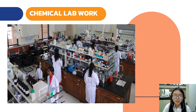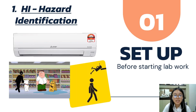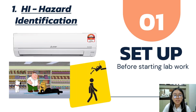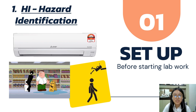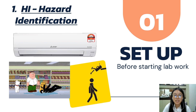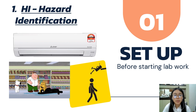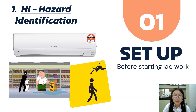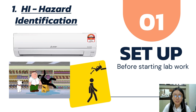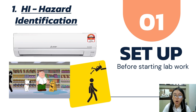Let's use chemical lab work as the example. Before conducting any lab work, we need to set up. The potential hazards of set up are inadequate access and air conditioning. Inappropriate setting may also cause slippery surfaces or objects falling from height.